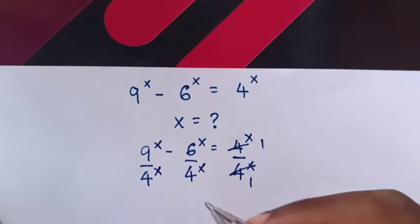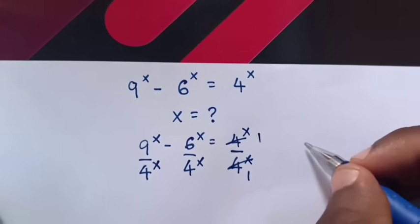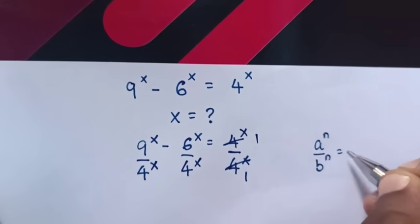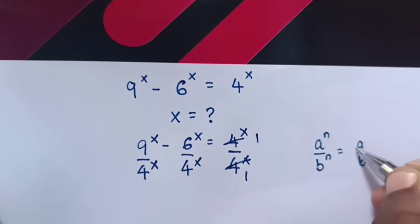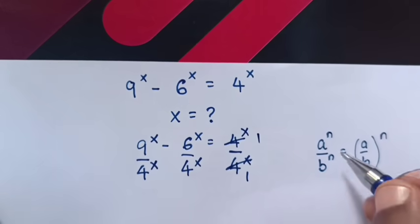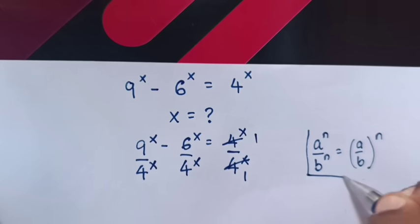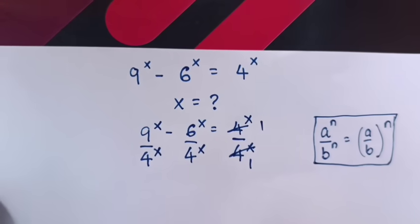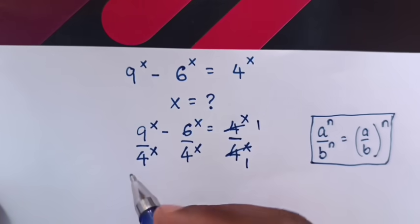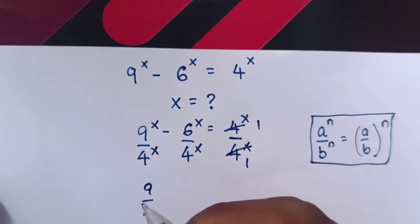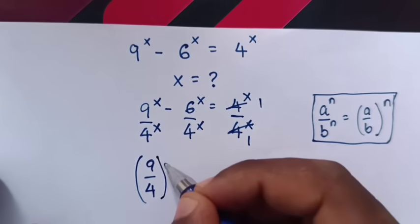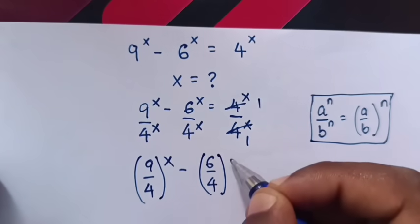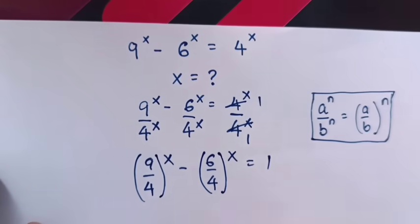We collect common powers of x, then apply the exponential rule that a power n over b power n is equals to (a over b) bracket power n. So in our equation, it will be (9 over 4) bracket power x minus (6 over 4) bracket power x is equals to 1.